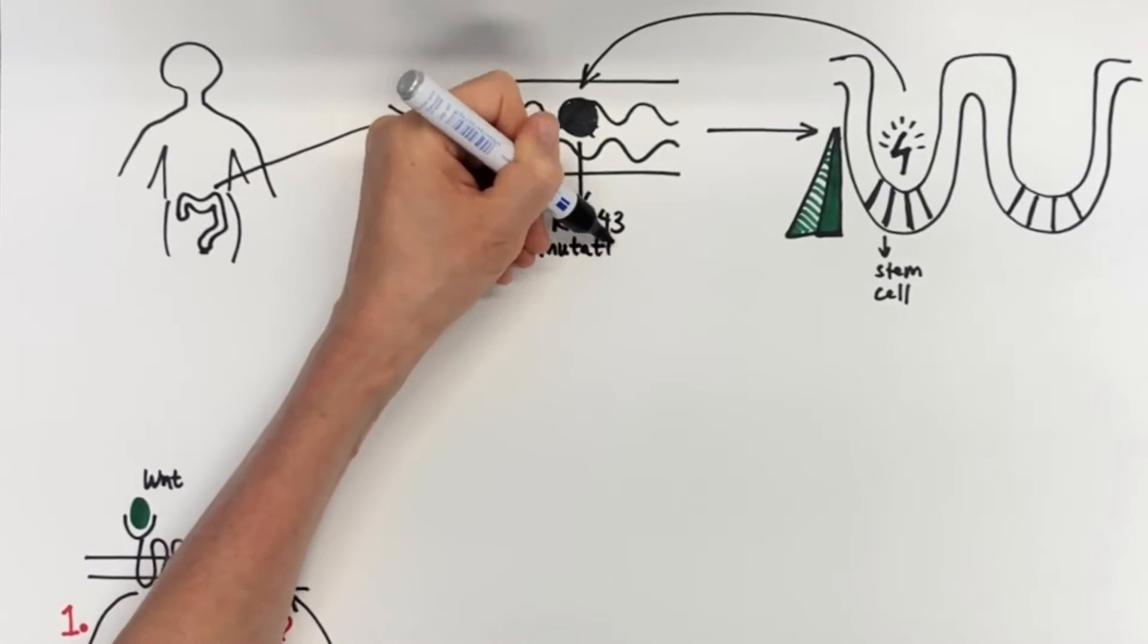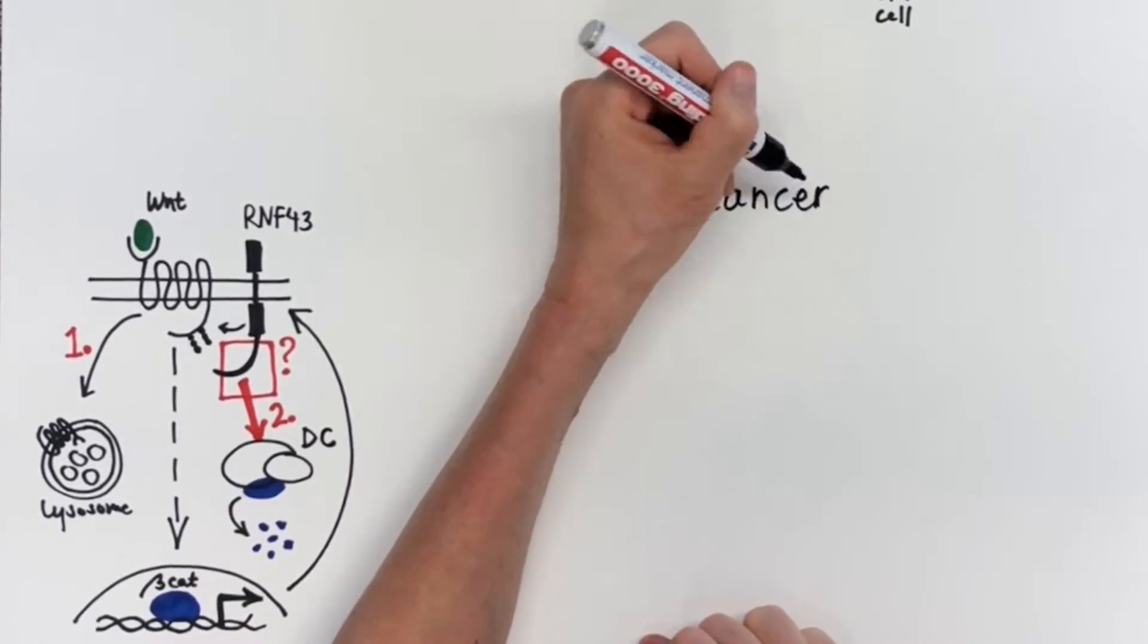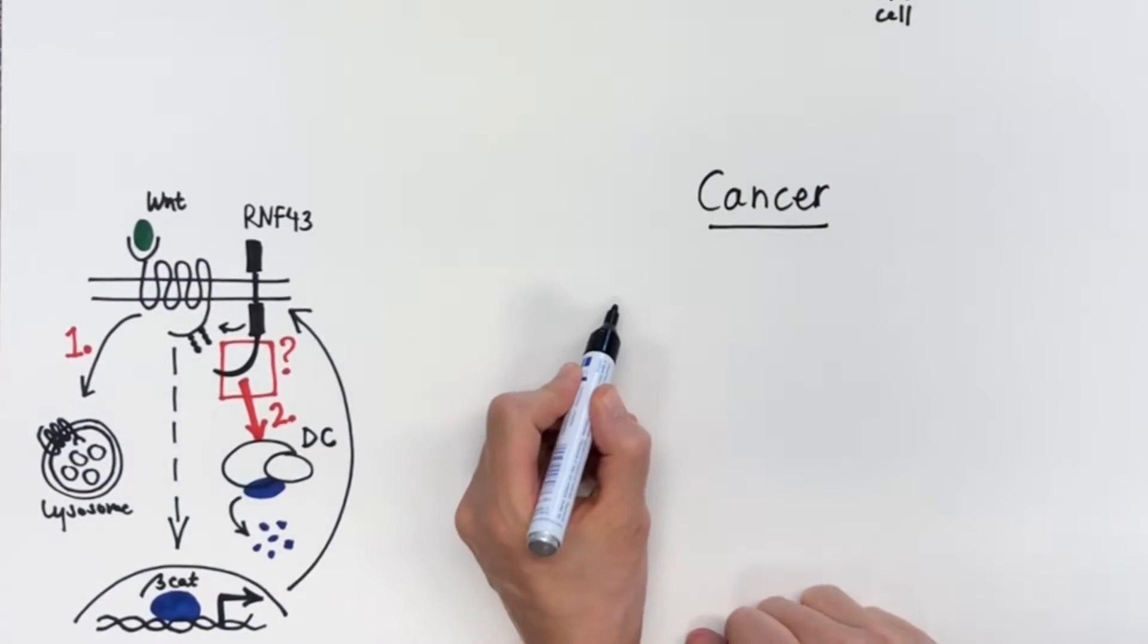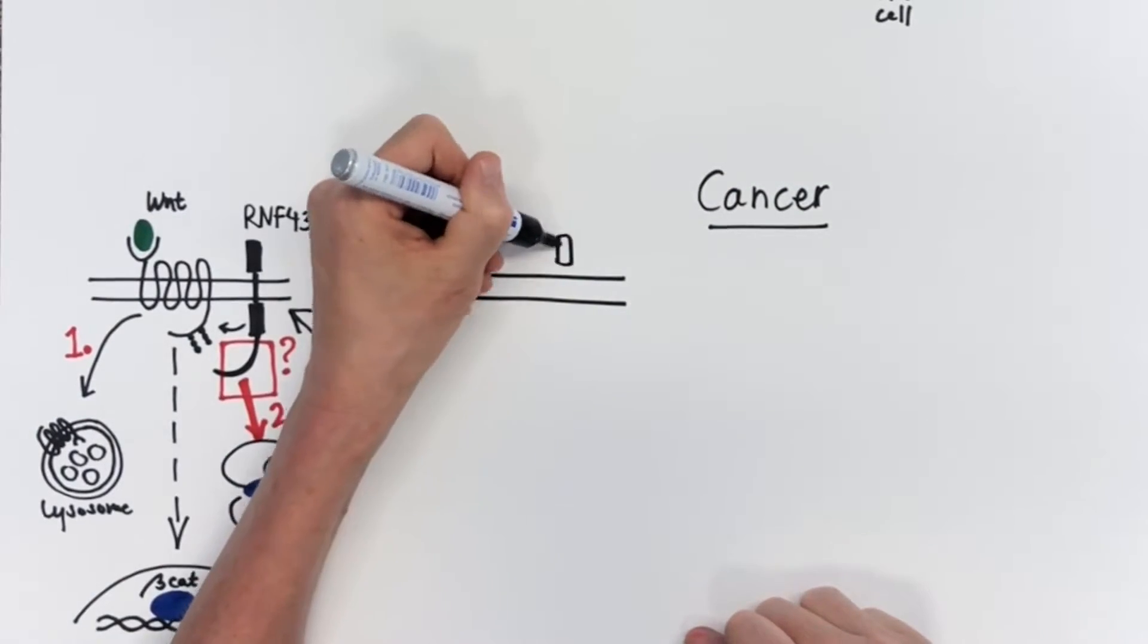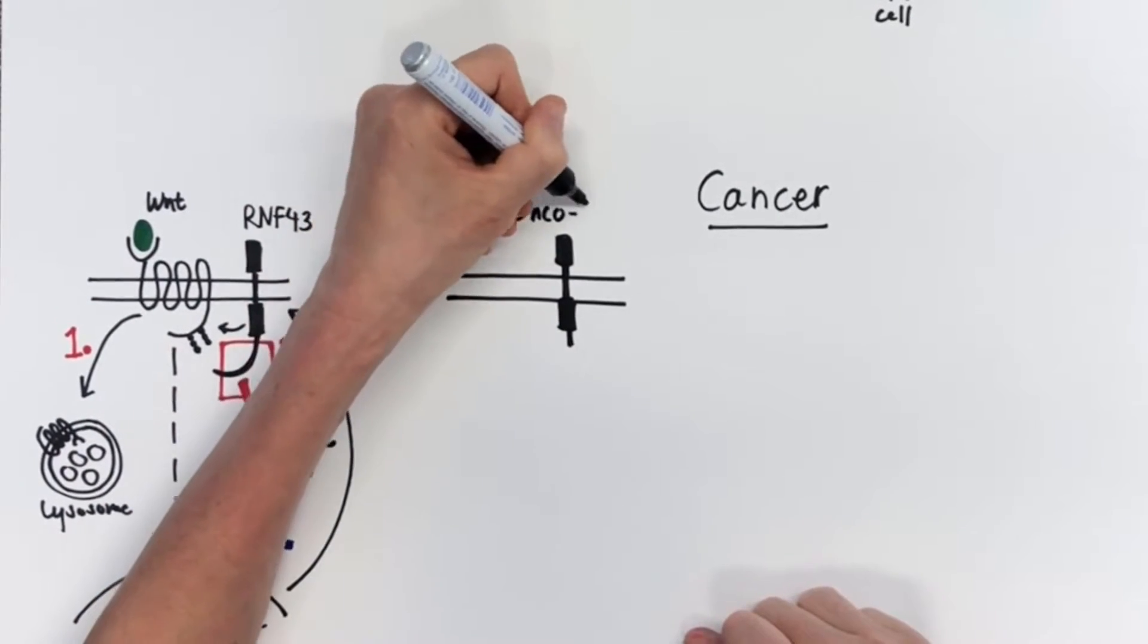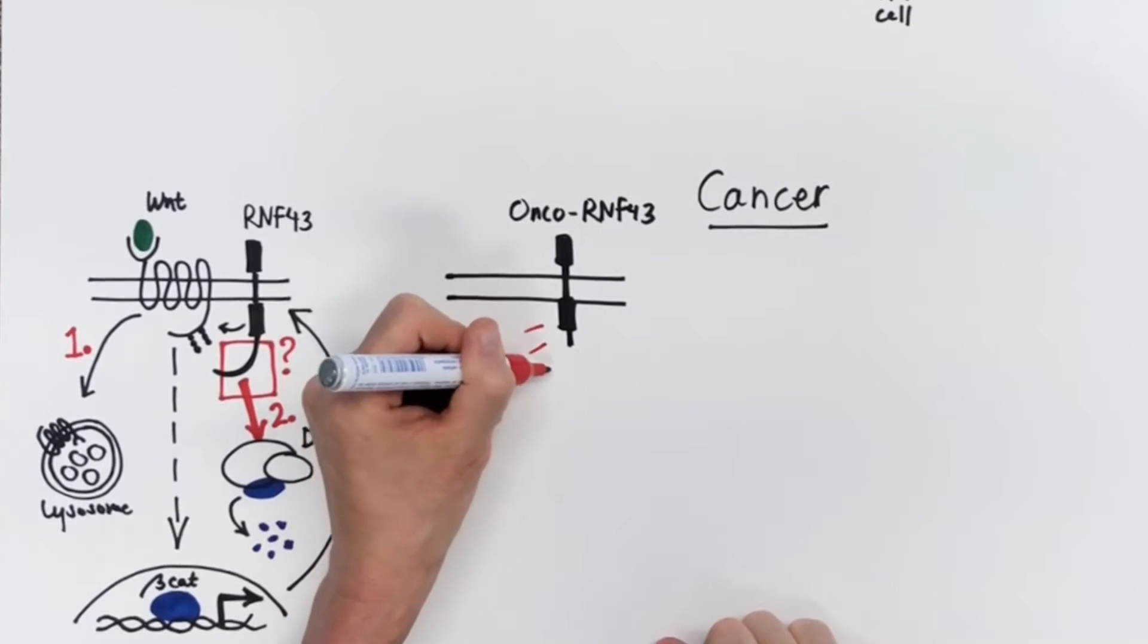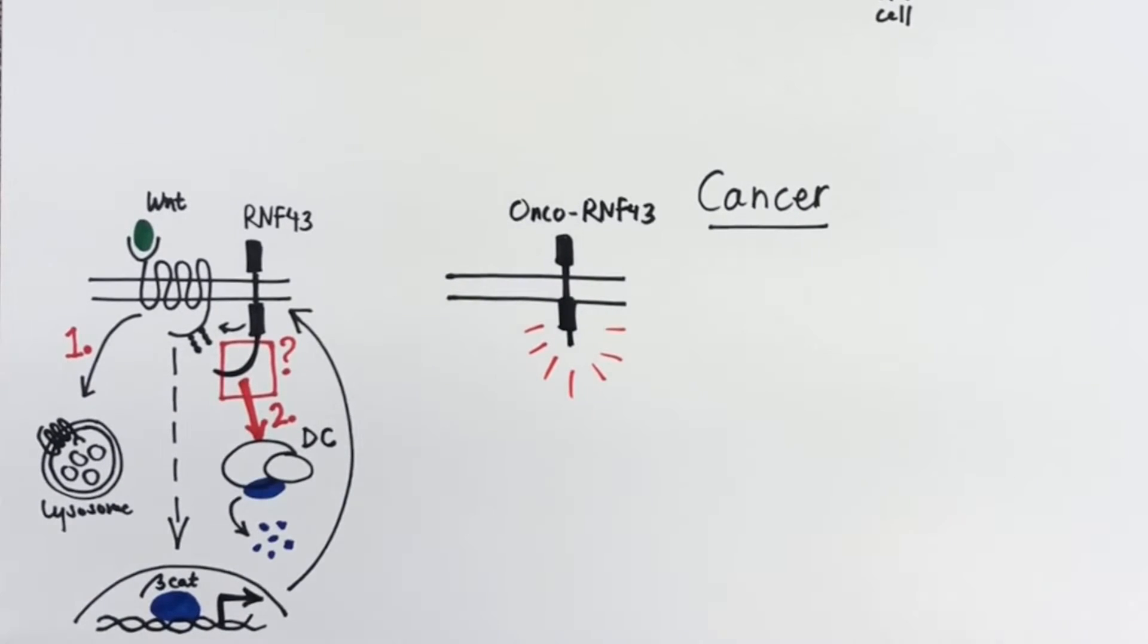RNF43 is frequently mutated in colon cancer. Here we identify a novel subclass of patient-derived RNF43 mutations that mediates C-terminal truncations of the protein. This subclass of RNF43 mutations shows oncogenic properties. Therefore, we refer to it as onco-RNF43.